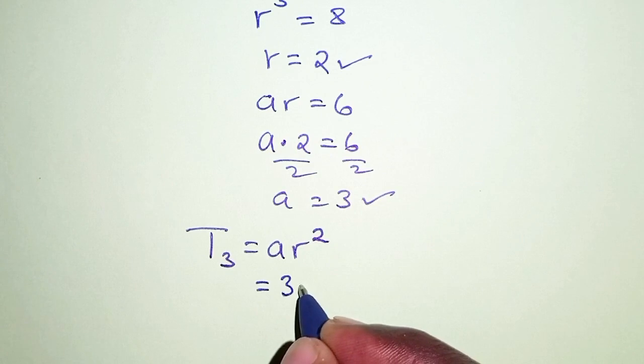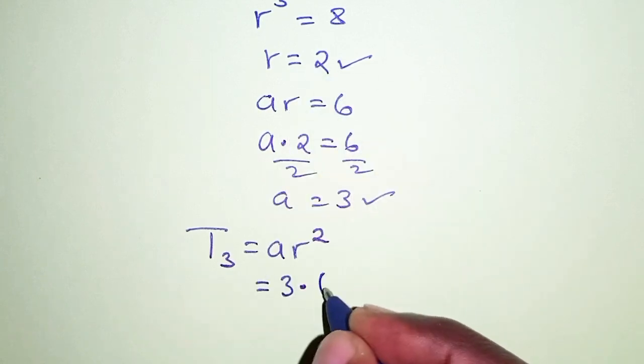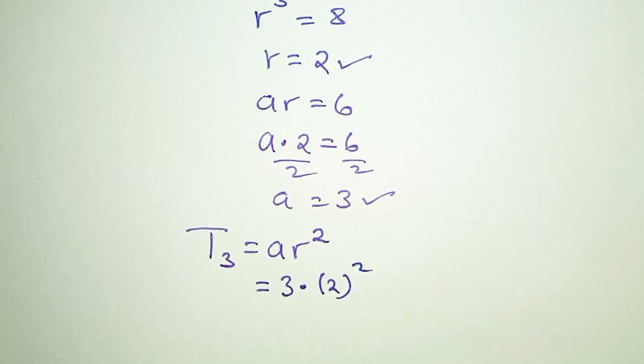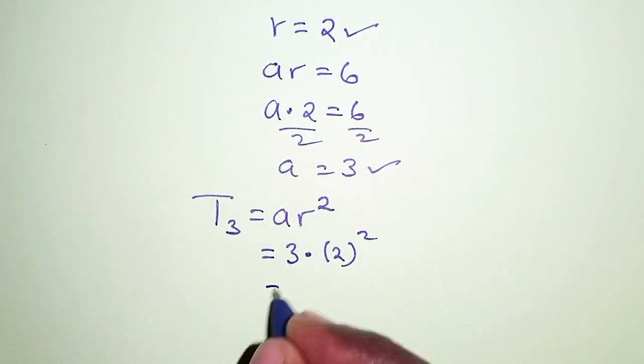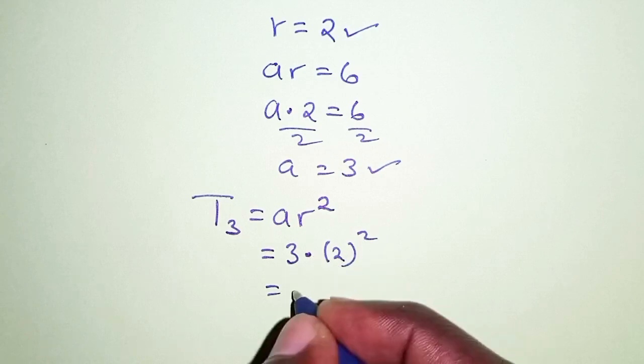Times we know r, 2, and therefore we'll have 2 squared. And this should be, so 2 squared is 4, 4 times 3, that is 12. So the third term is 12.